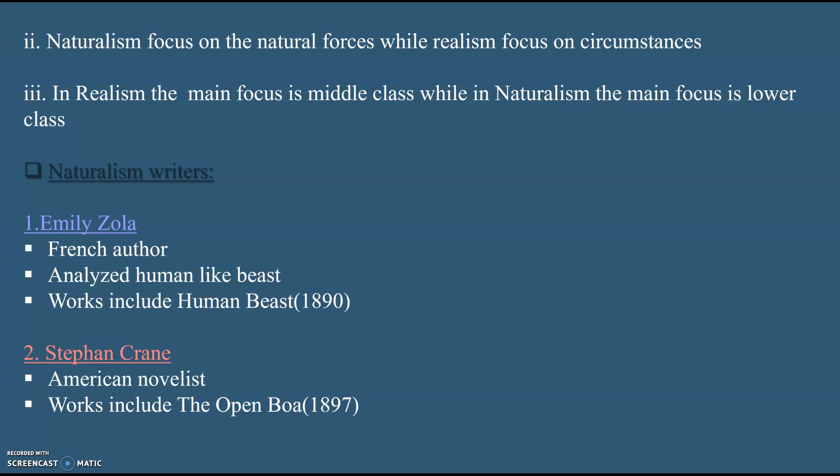In Realism the main focus was on the middle class and its problems, and in Naturalism the main focus was on poorly educated or lower class characters and themes involving violence and taboo activities. Notable naturalistic writers include Émile Zola, a French author who analyzed humans like any other beast and wrote Human Beasts in the 1890s, and Stephen Crane, an American playwright and novelist who wrote The Open Boat, conveying the feeling of loneliness that comes from a man's understanding that he is alone in the universe.